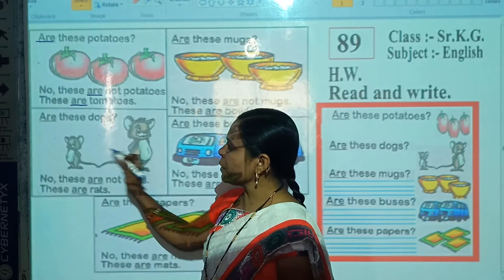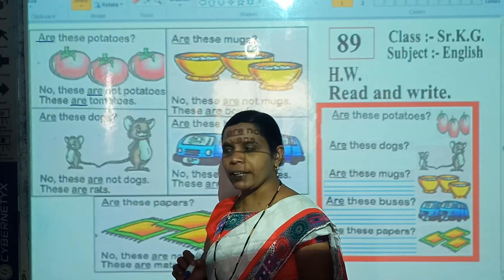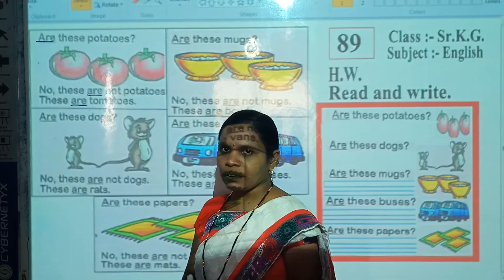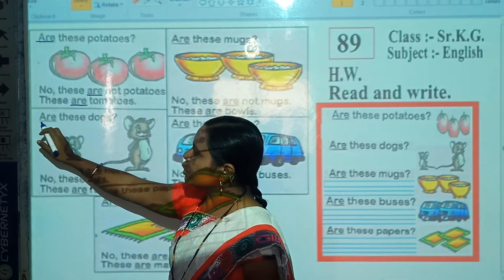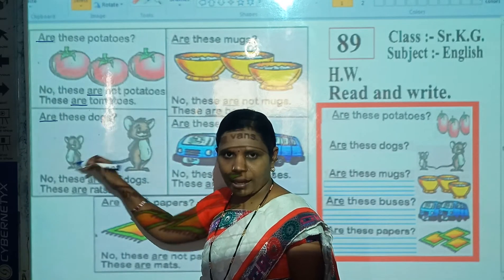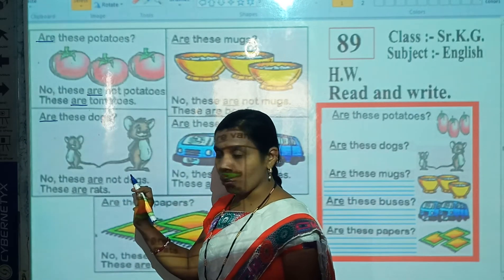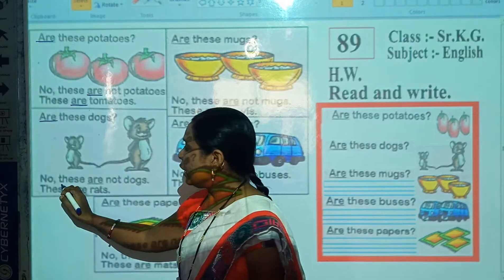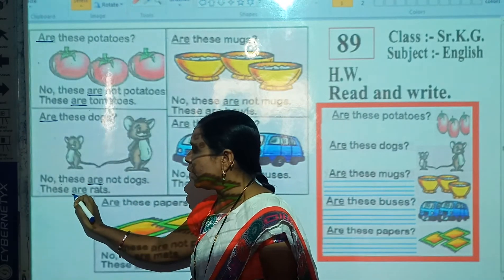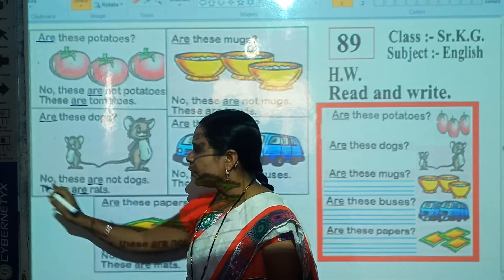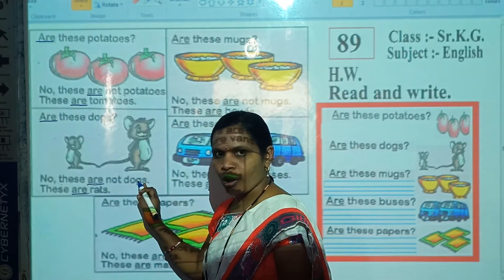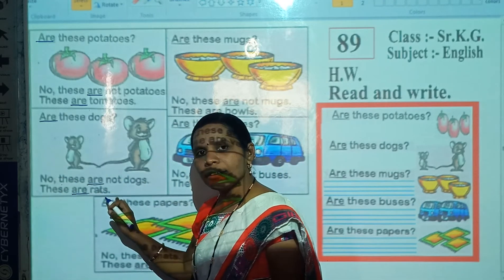Now look here. Which picture is this? Correct, this is the picture of a rat. Now read this question: Are these dogs? No, these are not dogs. These are rats.